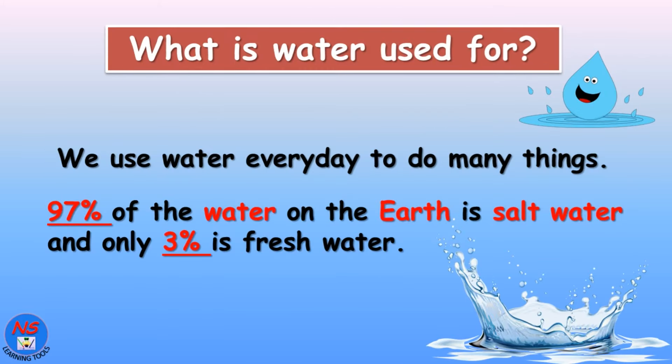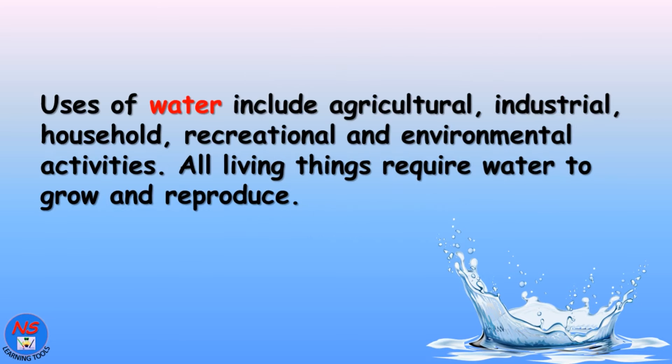What is water used for? We use water every day to do many things. 97% of the water on the earth is salt water, and only 3% is fresh water. Uses of water include agricultural, industrial, household, recreational, and environmental activities.